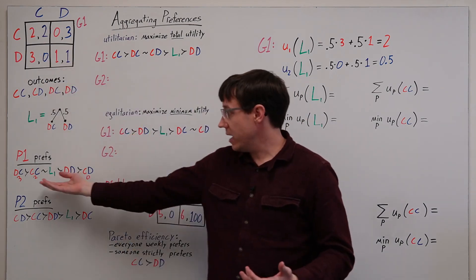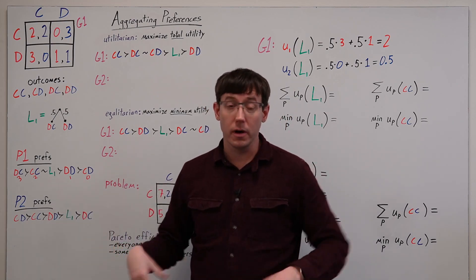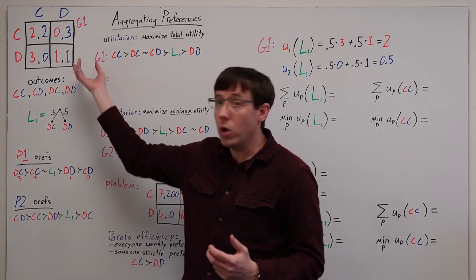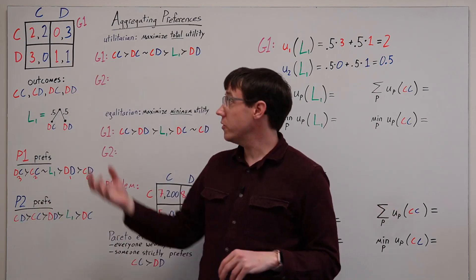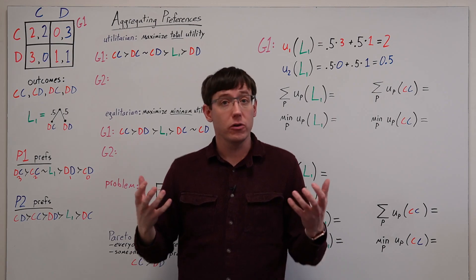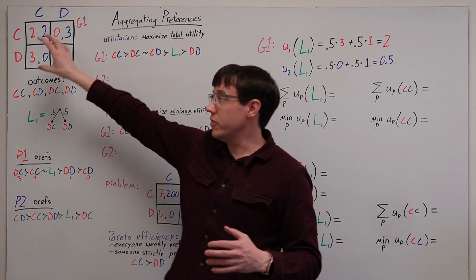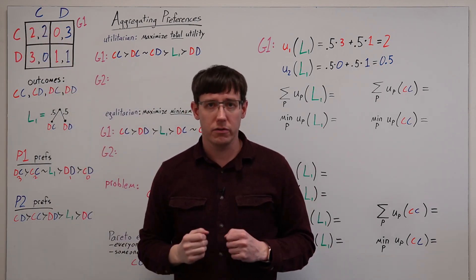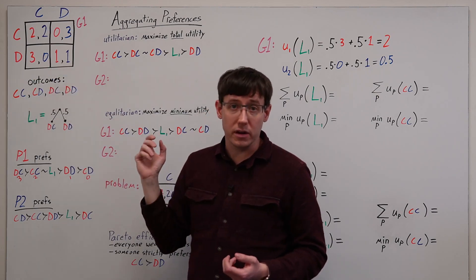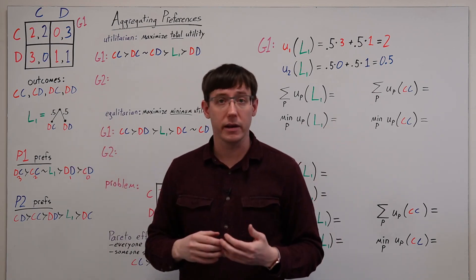But since our two players have a different preference ordering over the outcomes, and therefore also over many lotteries involving those outcomes, it's not necessarily obvious what it means for one outcome to be better than another. If we want to compare outcomes in a game in terms of how good they are for the players overall, we need some way of combining the preferences, or better yet, the utilities, of the different players. And perhaps the most obvious way to approach this is by just adding up the utilities in a given cell.